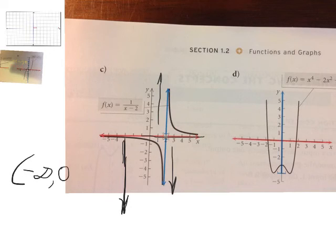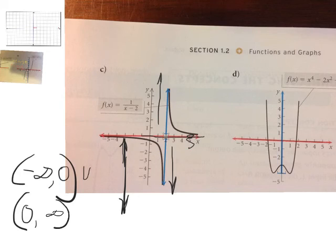So that means that my range, my y value, is going to go from negative infinity to 0. It's going to go from down here, negative infinity, to 0, but it never gets to 0, and it's going to union with 0, because again it never touches 0 here, never touches 0 here, but it goes up into infinity. So we've got negative infinity to 0, union with 0 to positive infinity.